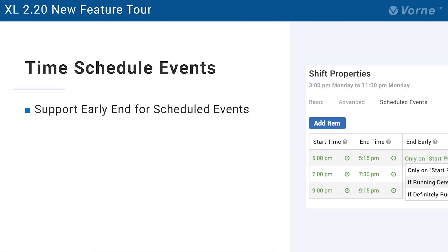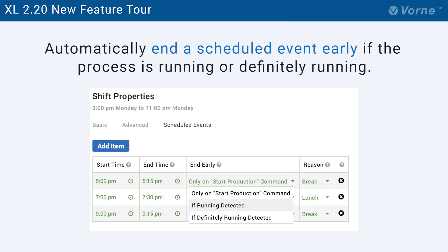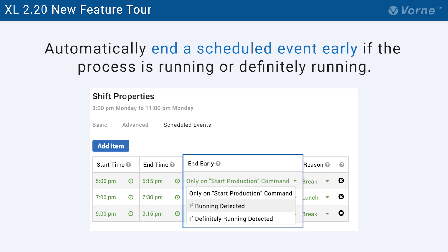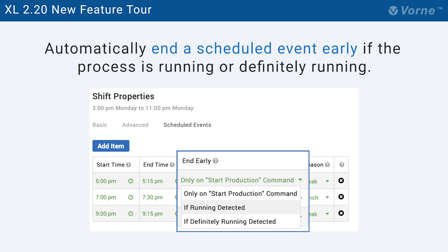Next up is a frequently requested feature related to time schedule events. Excel now can be configured to automatically end a scheduled event early if it detects that the process is running or definitely running.